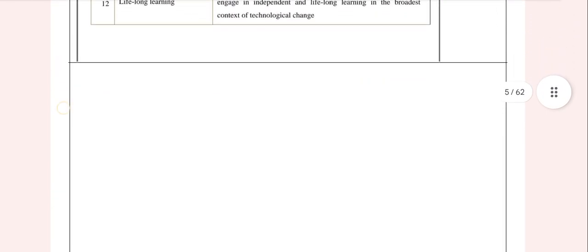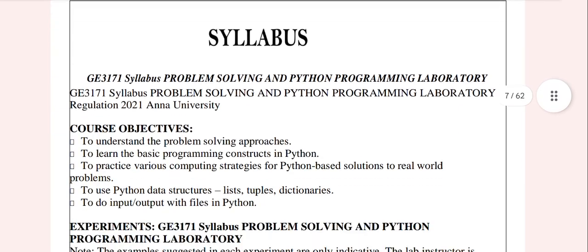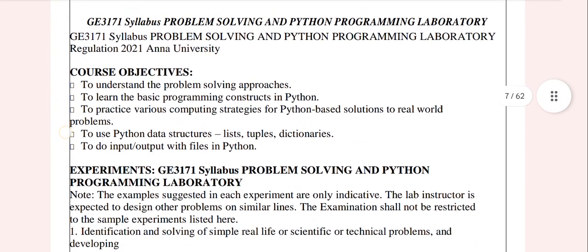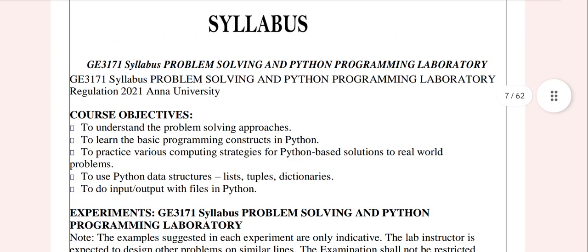Let's look at the first syllabus. The course code is G3171 — Problem Solving Python Programming, Regulation 2021.